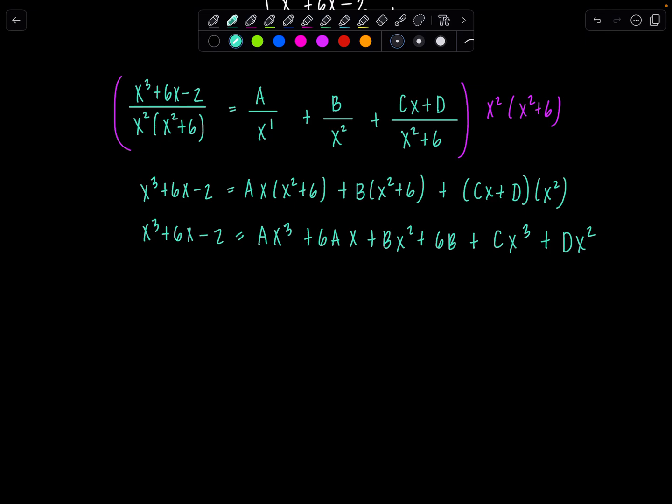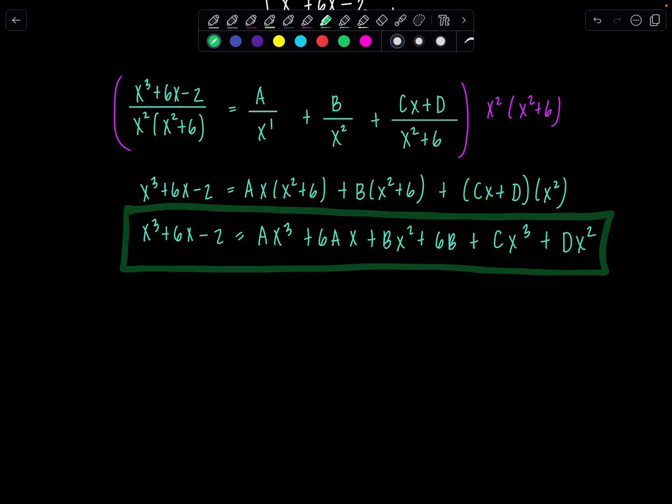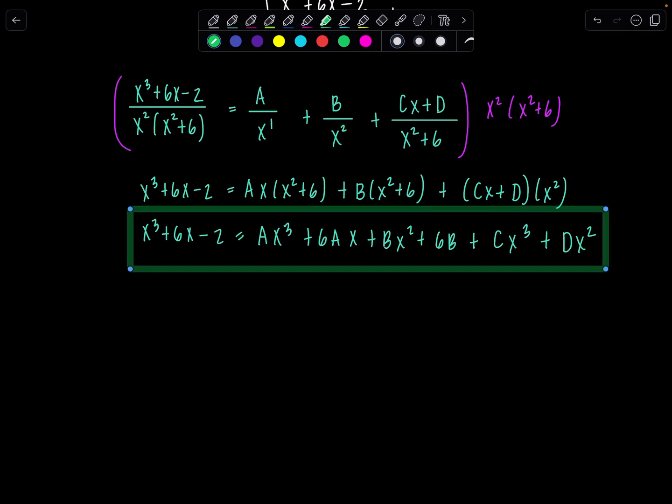So now look at this equation here. The highest degree term I notice is x cubed on both sides. So I'm going to equate the coefficients of x cubed. On the left-hand side, there's just that 1x cubed, and then that has to equal the coefficients of x cubed on the right-hand side, which would be A plus C. All right, moving on down the list, x squared. I don't see any x squareds on the left, so 0 has to equal B plus D.